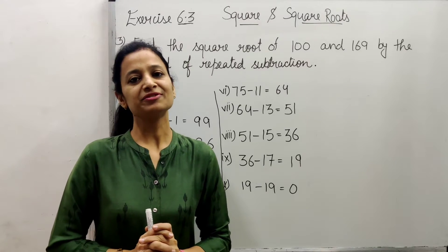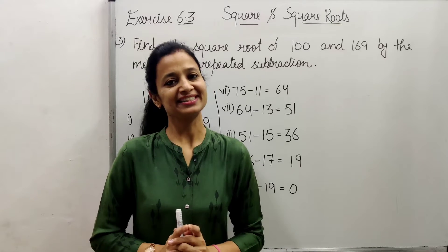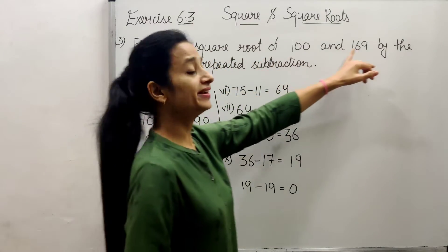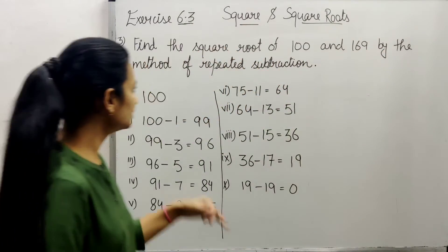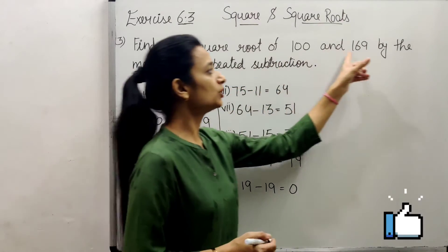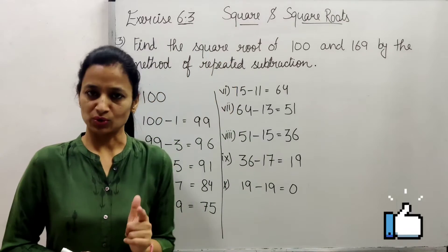Hello everyone, my name is Jay Zee and in this video I am going to explain question number 3 of exercise 6.3. The question is: find the square root of 100 and 169 by the method of repeated subtraction.